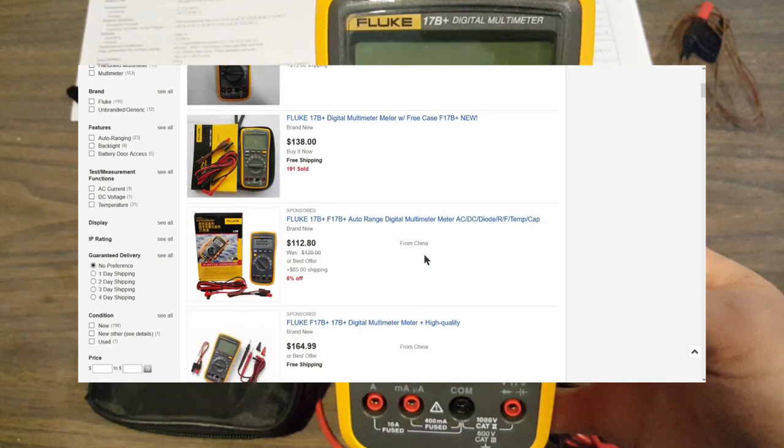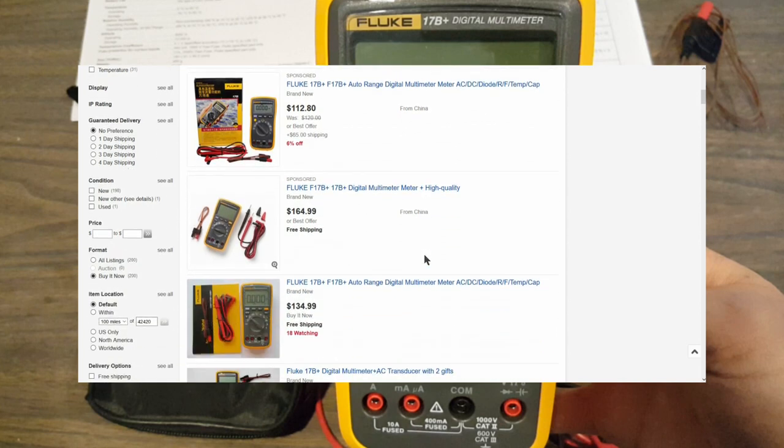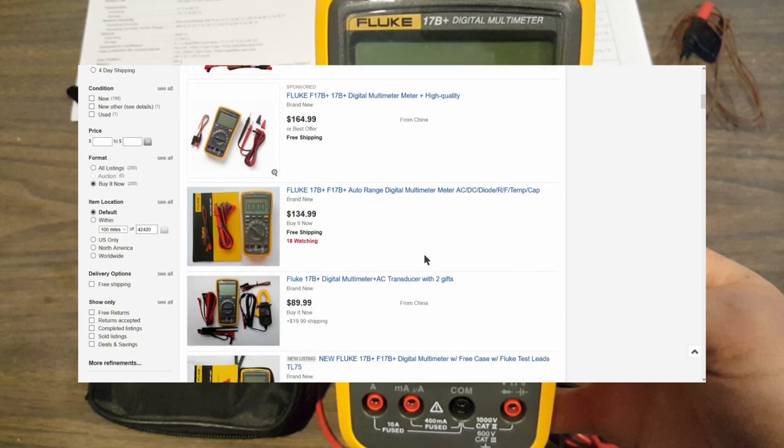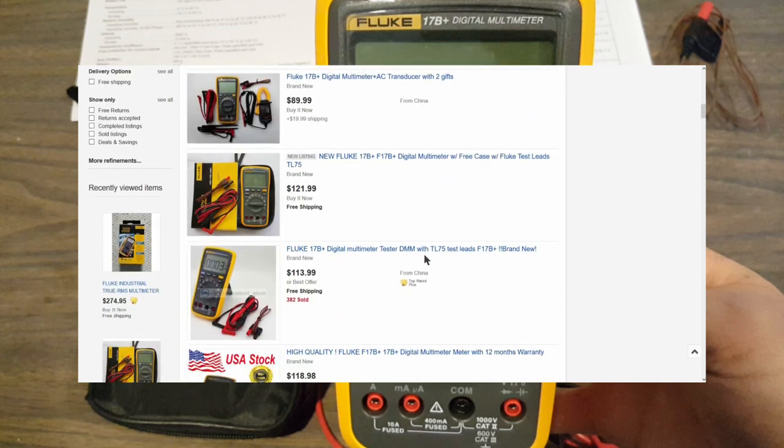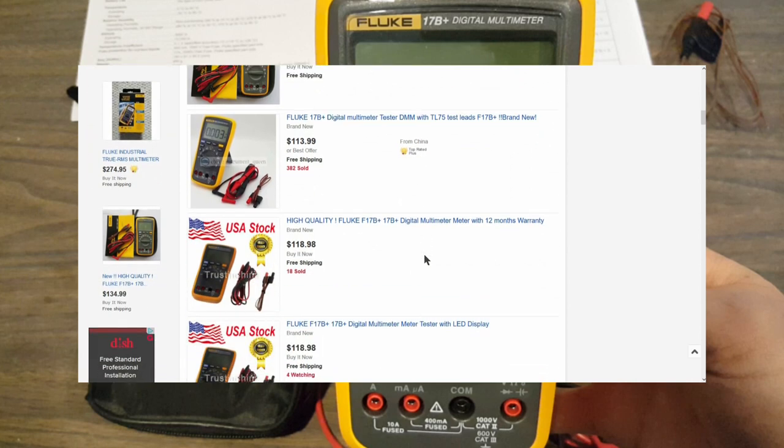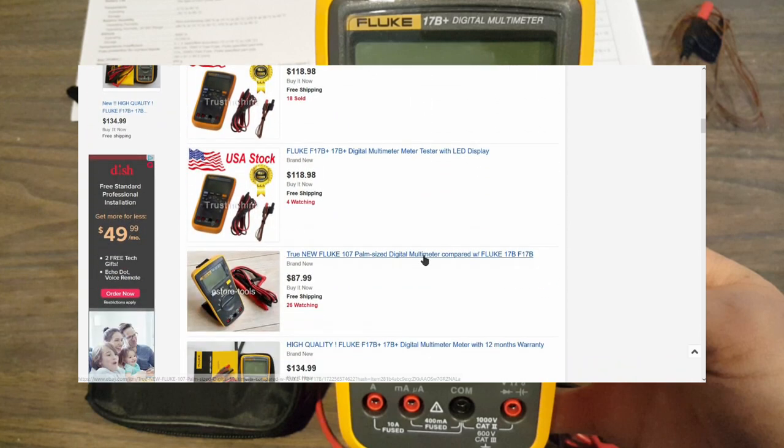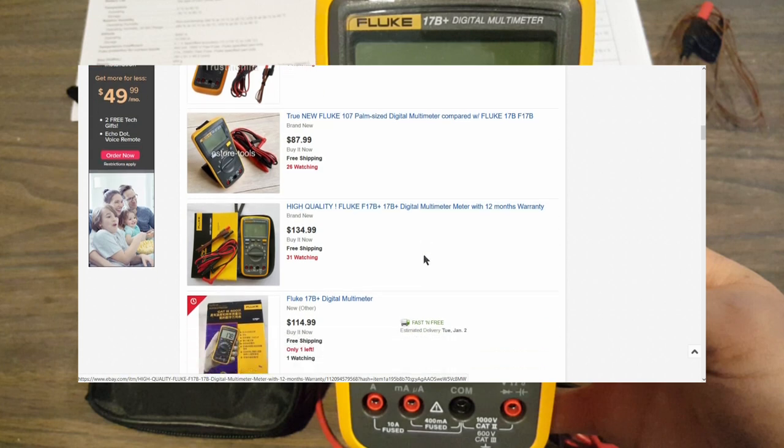You can pick up one of these used on eBay for as little as $50, and as long as it's been treated well, a used meter should be just fine. Now, new in the box, on eBay, between $120 and $140, and from Amazon Prime, it's $139. I'll put links below.